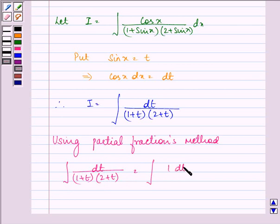as the value of A we got as 1 minus 1 dt upon 2 plus t as the value of B after using partial fraction we got as minus 1.